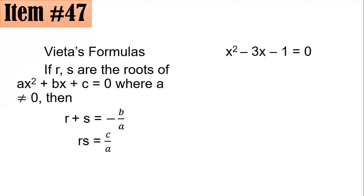So for x² - 3x - 1, let's compute for the sum of the roots. So that is r + s is equal to -b/a. So negative of -3 over 1, which is 3. So the sum of your roots is 3. And for the product of the roots, that's c/a or -1 over 1 or -1.